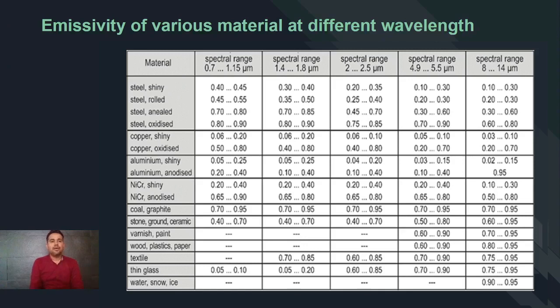As an example, if we consider the spectral range from 0.7 to 1.5 microns and the material is shiny steel material, it has the emissivity of 0.4 to 0.45. If we consider the spectral range from 8 to 14 microns, then the emissivity of the steel is 0.1 to 0.03 microns.